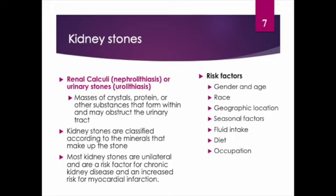Most people will develop their first kidney stone before they're 50 years old. Geographically, average temperature, humidity, and rainfall can influence stone formation by affecting fluid intake and dietary patterns. Those who regularly consume an adequate amount of water and are more physically active have a reduced risk of kidney stones compared to patients who are more inactive or consuming lower volumes of water. Kidney stones usually occur unilaterally and are a risk factor for chronic kidney disease, and also increase your risk for myocardial infarction.